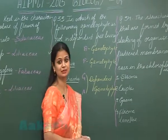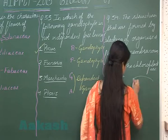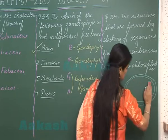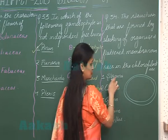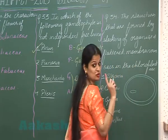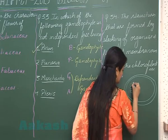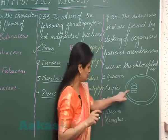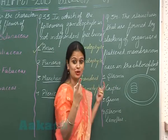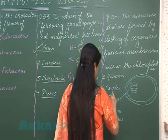Coming to question number 34, which is a very easy question. In the chloroplast there is a double membrane, and the space inside is filled with a jelly-like substance known as stroma. There are membranous sac-like structures called thylakoids, and the thylakoids are stacked one above the other like piles of coins. This stacked structure is called grana, which is the right option here.